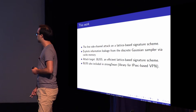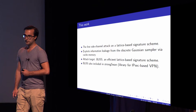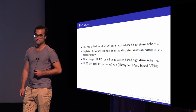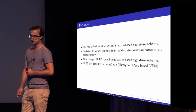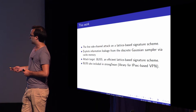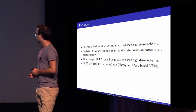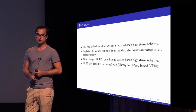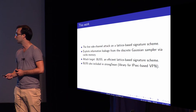The attack exploits information leakage from the discrete Gaussian sampler via cache memory. There are more schemes that use discrete Gaussians, but our attack target is BLISS, which is an efficient lattice-based signature scheme. There are several implementations available of BLISS — for instance, BLISS is also included in StrongSwan, a library for an IPsec-based VPN. We didn't attack StrongSwan, but we attacked the research-oriented implementations made available by the authors.